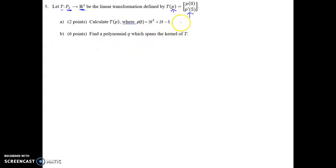So for Part A here, to calculate T of the polynomial 3T squared plus 2T minus 1, what we need to find is P of 0.